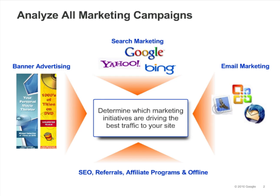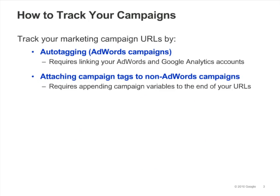Google Analytics allows you to track and analyze all of your marketing campaigns, including paid search campaigns, banner ads, emails, and other programs. There are two ways to track ad campaigns. For AdWords campaigns, you should enable keyword autotagging. This allows Google Analytics to automatically populate your reports with detailed AdWords campaign information. In order to enable autotagging, you'll need to link your AdWords and Google Analytics accounts. We'll look at this in more detail in the next slide.